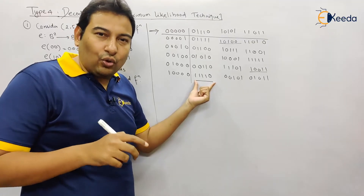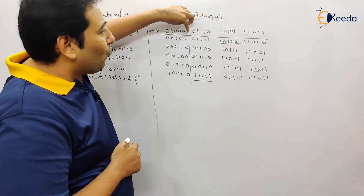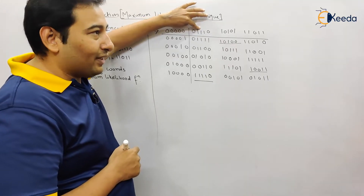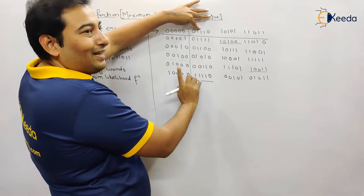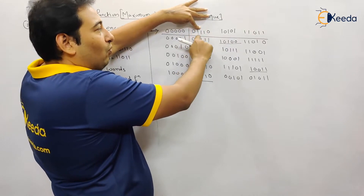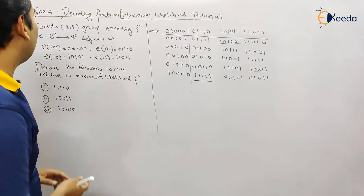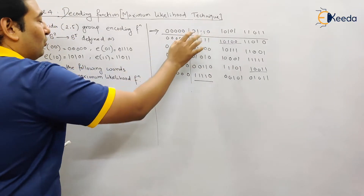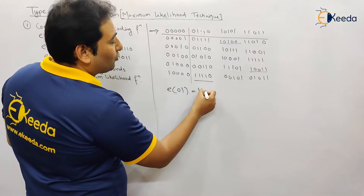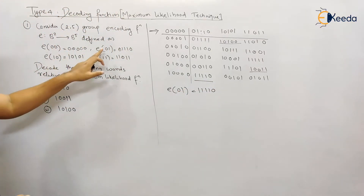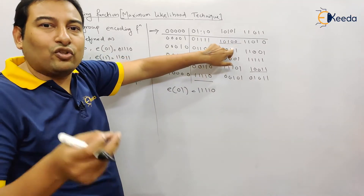What you need to do: go to the top of the table and check what is the encoding function for this particular code. Whatever encoding function is at the top of the column, that becomes the encoding function for the underlined code — that's it. For the sequence 01110: checking the top of the table, the encoding function is E01. Therefore E01 is the encoding function for this sequence. There can be more than one code for E01 — that is perfectly okay.